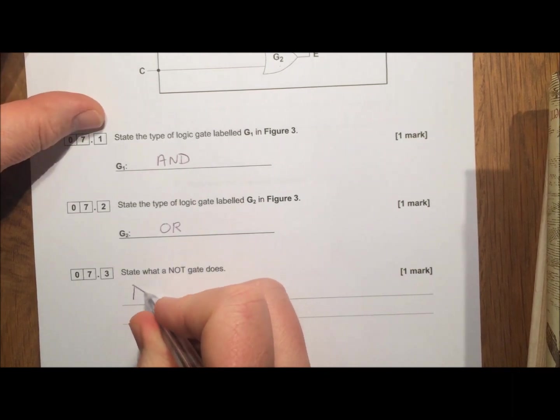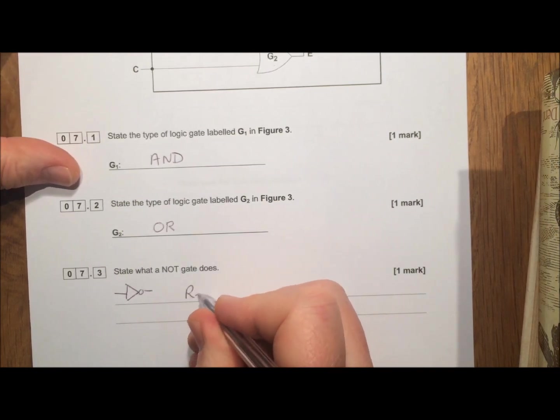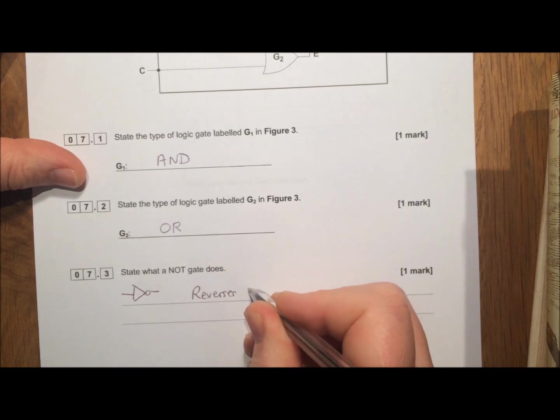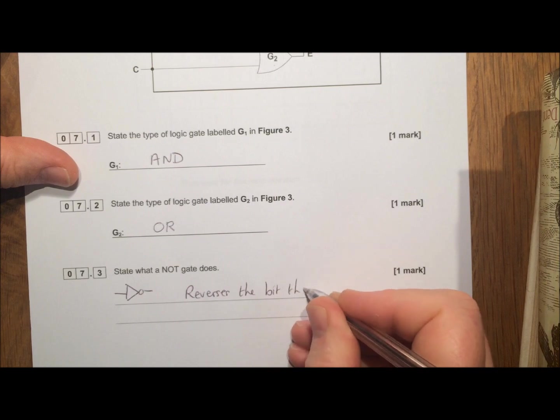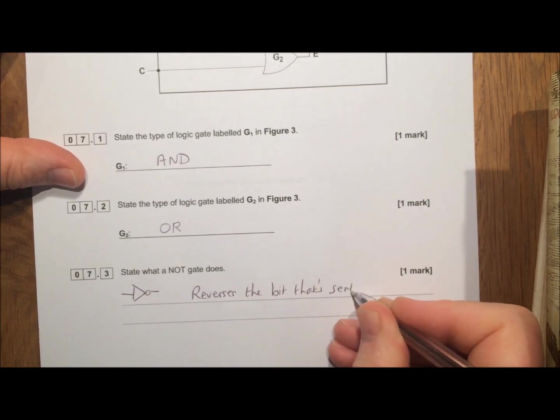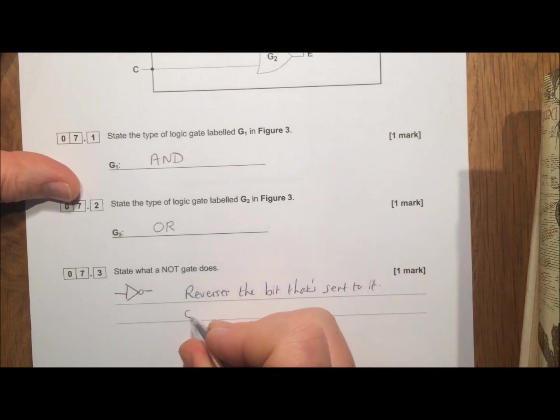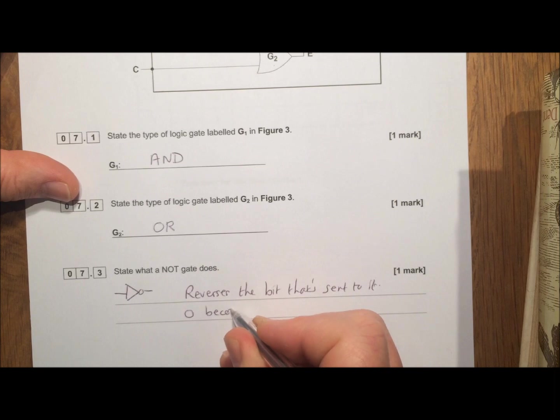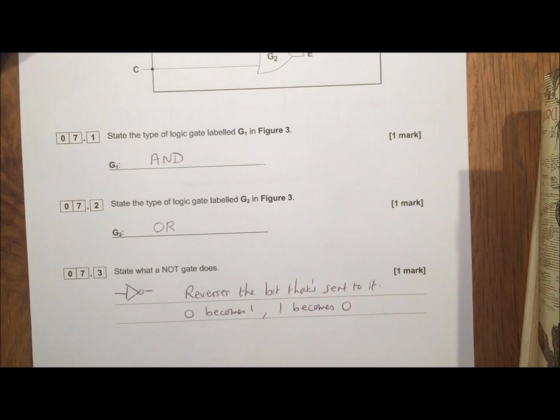State what a NOT gate does. Now we haven't got a NOT gate on here. You'll remember that a NOT gate symbol is that, and it's a reverser. So if we just write down reverses the bit that's sent to it, that would get you your mark. Or you could just say 0 becomes 1, 1 becomes 0. That would be perfectly okay to get a mark.